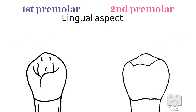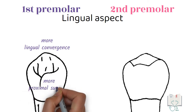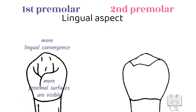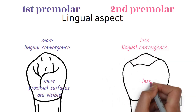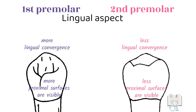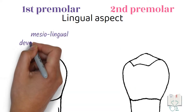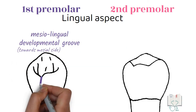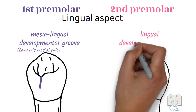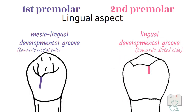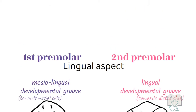Additionally, in the first premolar there is significant lingual convergence, because of which more of the mesial and distal surfaces can be seen. Whereas in the second premolar, lingual convergence is minimal, and lesser mesial and distal surfaces are seen. In the first premolar, a mesolingual developmental groove runs adjacent to the lingual cusp, whereas in the second premolar, a lingual developmental groove runs between the two lingual cusps.